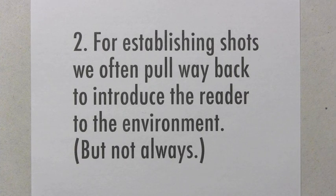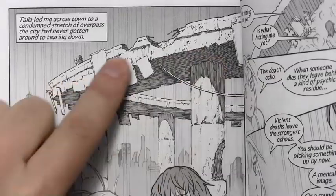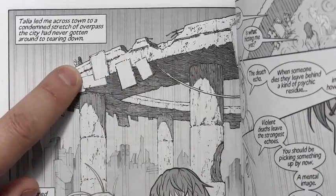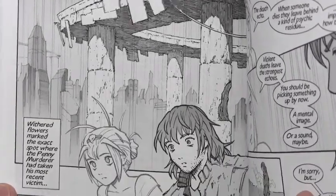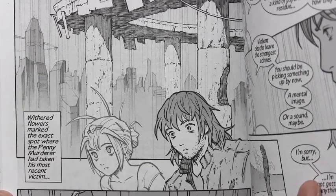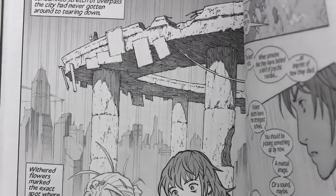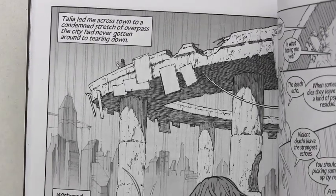Number two: for establishing shots we often pull way back to introduce the reader to the environment, but not always. From Brody's Ghost, we have a scene where Brody and Talia the ghost are up on a decaying overpass. I pull the camera way back to establish the scene — we barely see Brody and Talia at all. This is all about the scene giving the reader a sense of location before we zoom in and get a closer look as they begin talking. Get the reader to understand where the scene is taking place. Put that out in great detail at the beginning, and then you don't have to keep drawing it again and again.